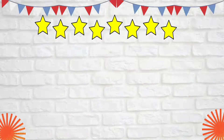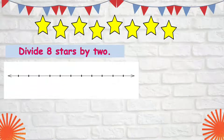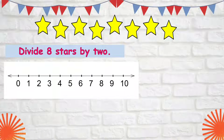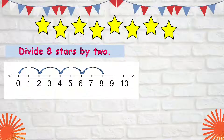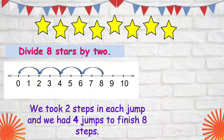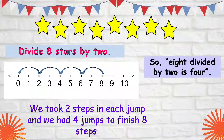We can also divide these 8 stars using another method — the number line. Let's label our number line from 0 to 10. We can take 2 steps per jump: first jump, second jump, third jump, and fourth jump. We took 2 steps in each jump and had 4 jumps to finish 8 steps. So 8 divided by 2 is 4.